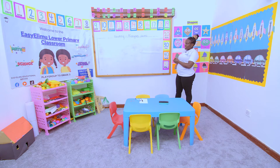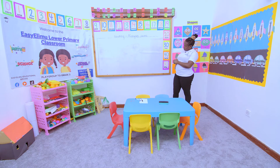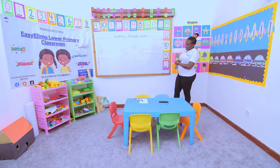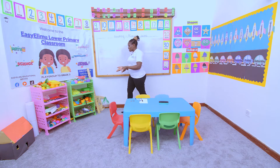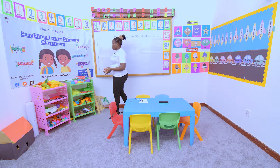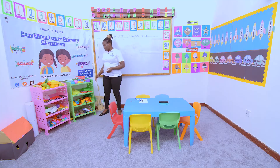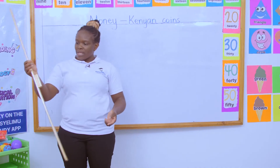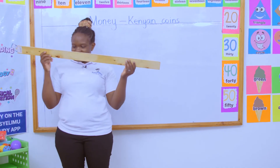When you talk about money, Kenyan money is divided into two groups. The things you go to buy in the shop, they are what we call the goods. If I go to the shop right now and say give me a ruler, this is a good. Why? Because I can touch it, I can see it.